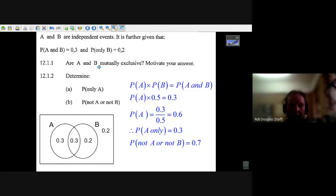Are A and B mutually exclusive? Well, you can say right off the bat, they're not mutually exclusive because the probability of A and B is not zero. For it to be mutually exclusive, their intersection must be zero. There must be nothing where they intersect. So that's why it's not mutually exclusive, because the probability is not equal to zero.